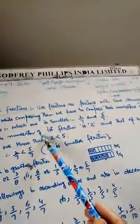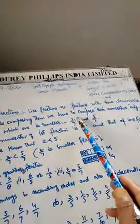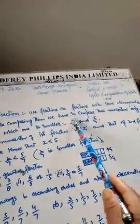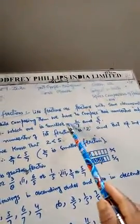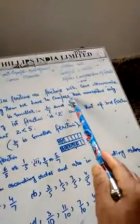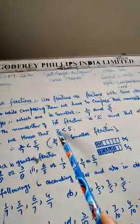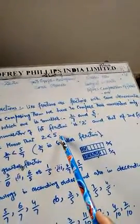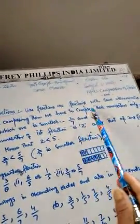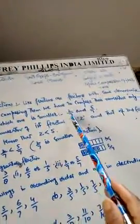Since they have the same denominator, we compare the numerators. The numerator of the first fraction, 2/7, is 2, and the numerator of the second fraction, 5/7, is 5. We know that 2 is smaller than 5, therefore the fraction 2/7 is also smaller than 5/7.